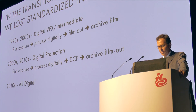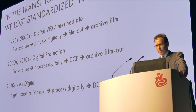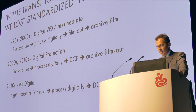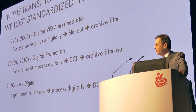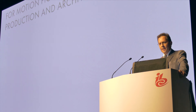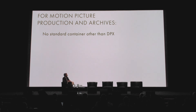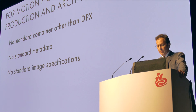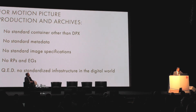As we got into this decade, we became pretty much all digital — mostly all digital capture. There are still a few movies shot on film, but mostly it's all digital. No standards there. We processed digitally — no standards there. We do have distribution standards and archiving standards. So you could say we're in pretty good shape on the distribution and exhibition side — 97% digital in the U.S. and upwards of 80% worldwide. But for motion picture production and archives, we have no standardized digital container other than DPX (SMPTE ST-268). There are no metadata standards for motion picture production, no standard image specifications, and no recommended practices or engineering guidelines. We have no standardized infrastructure in the digital world — upstream in production and downstream in the archives.